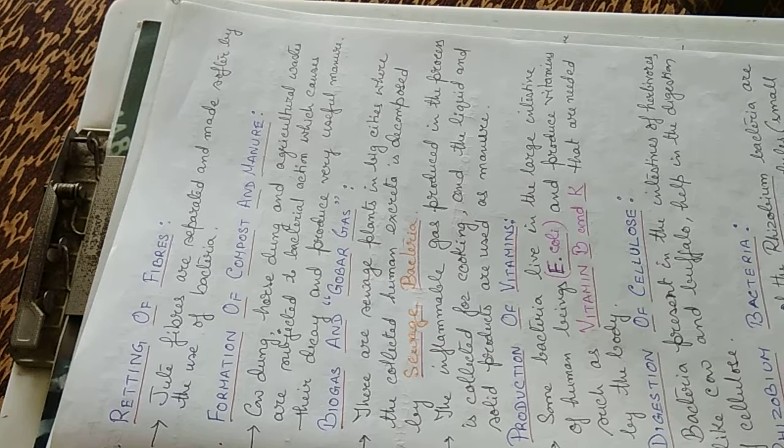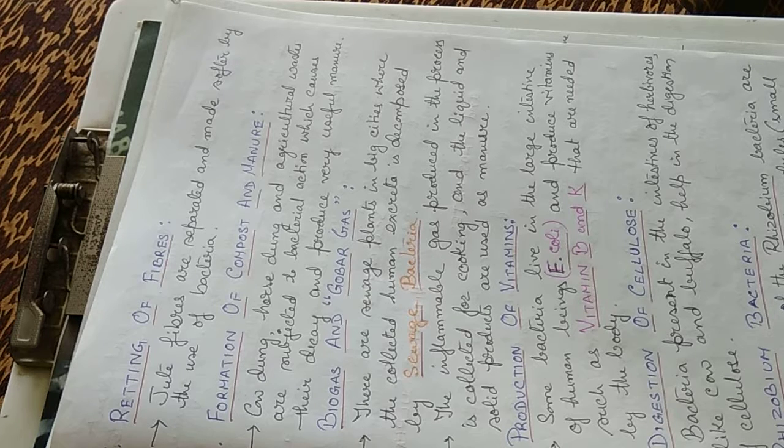For production of vitamins, some bacteria live in the large intestine of human beings like E. coli and produce vitamins such as vitamin B and K that are needed by the body. They are used in the digestion of cellulose. Bacteria present in the intestines of herbivores like cow and buffalo help in the digestion of cellulose.